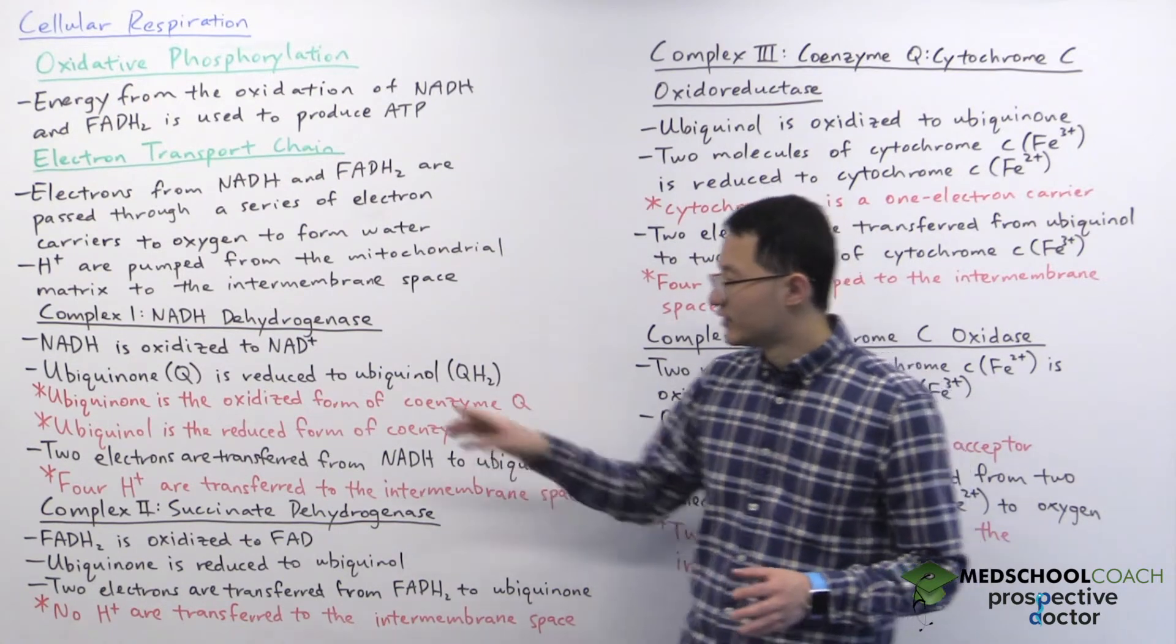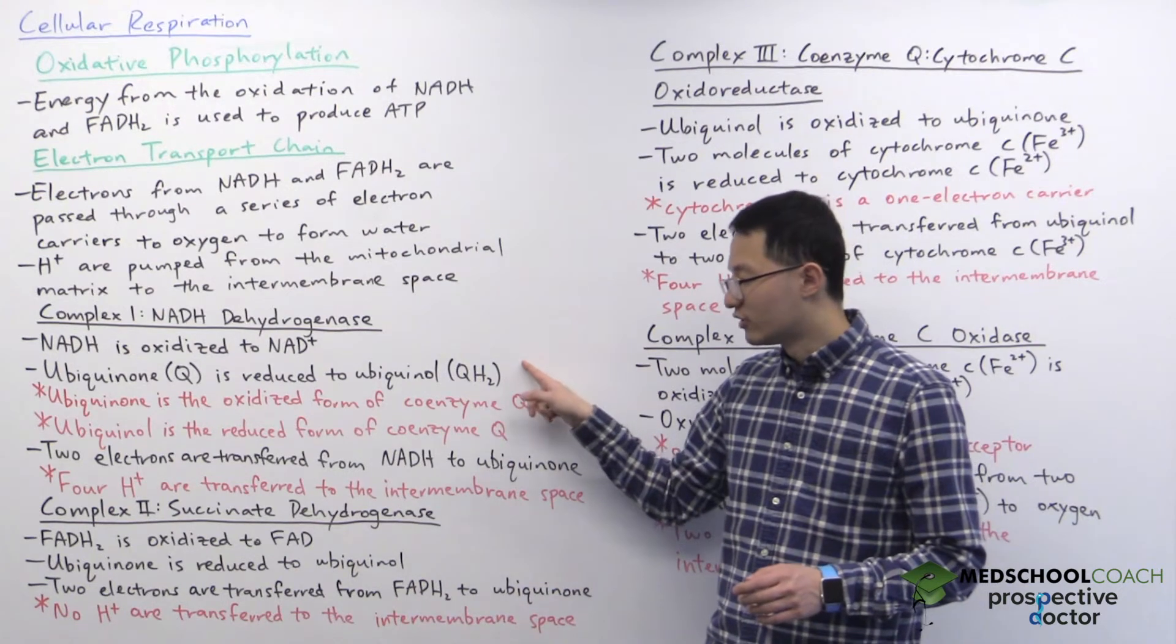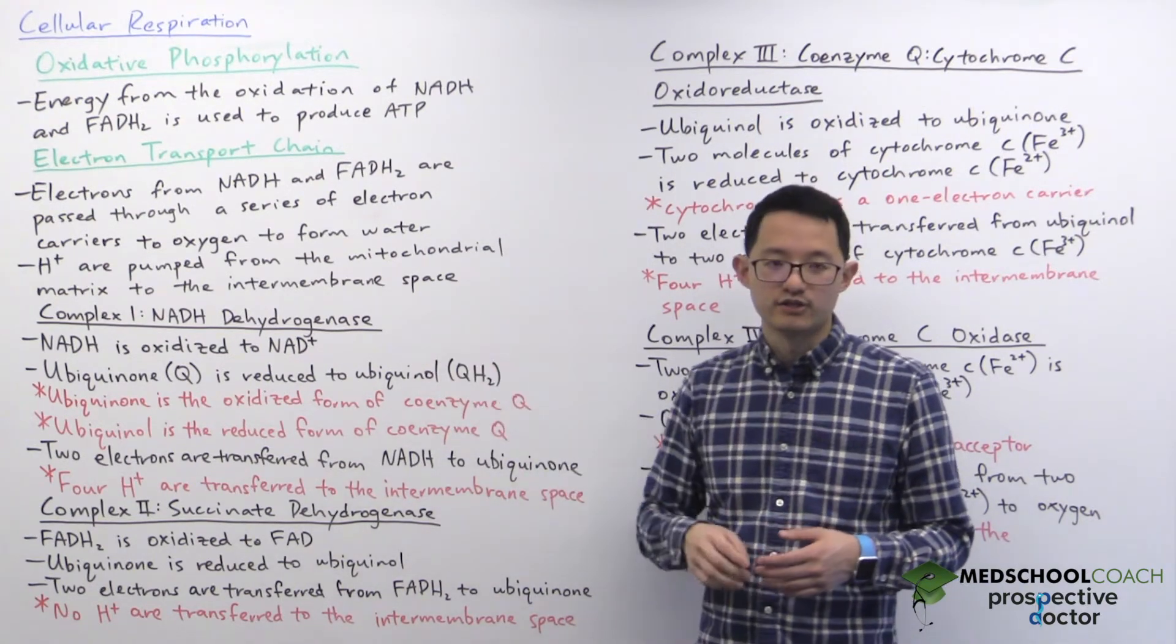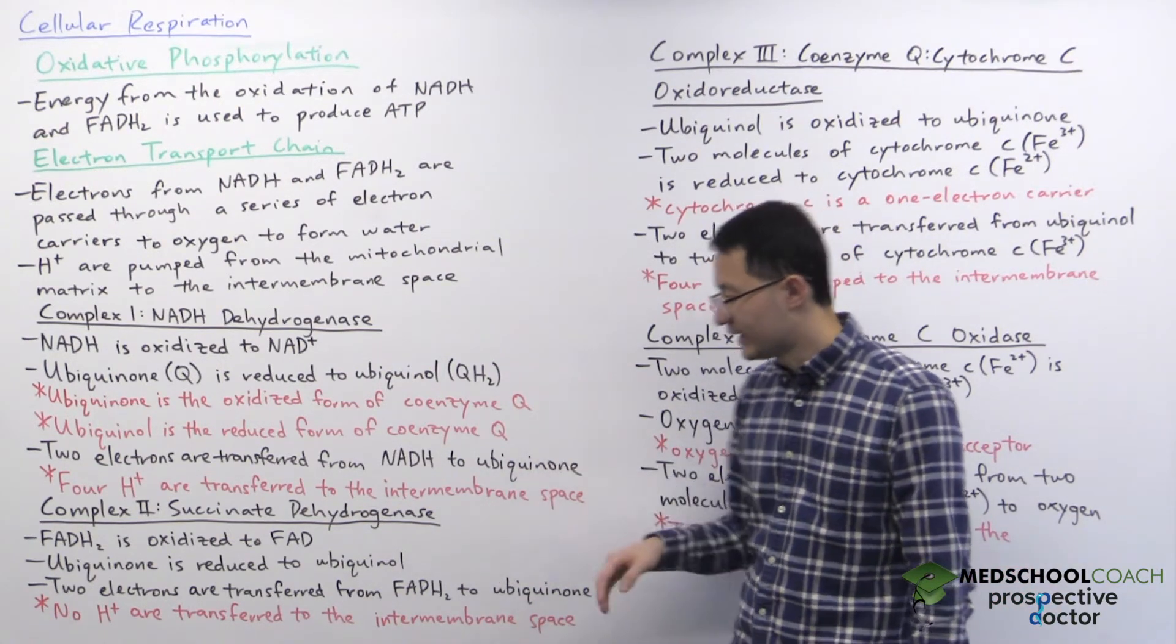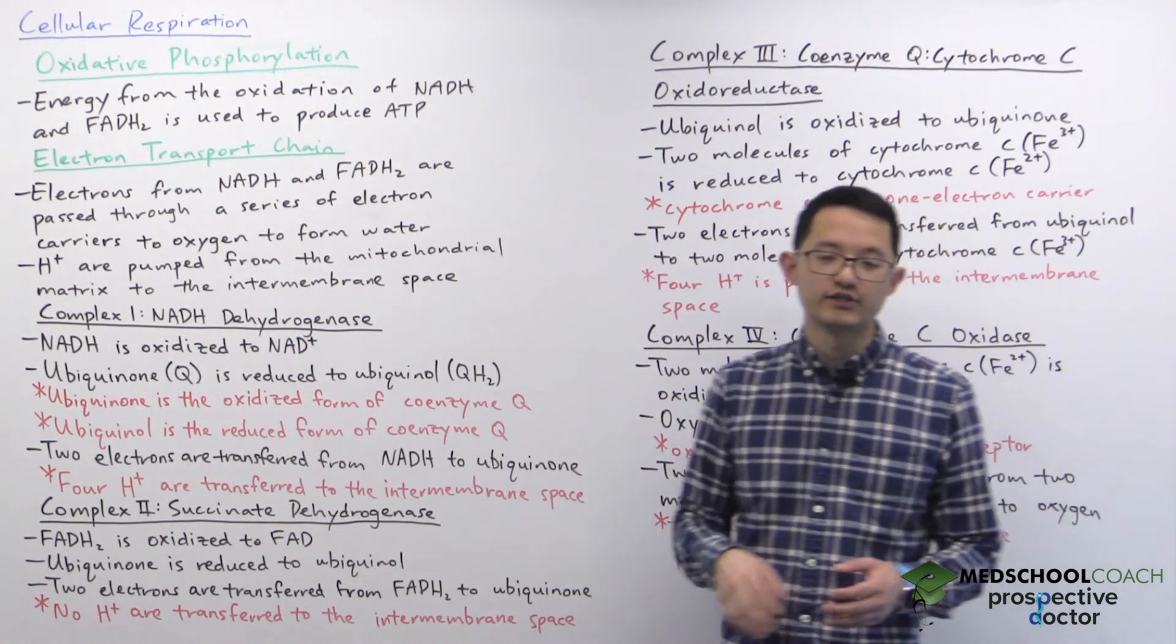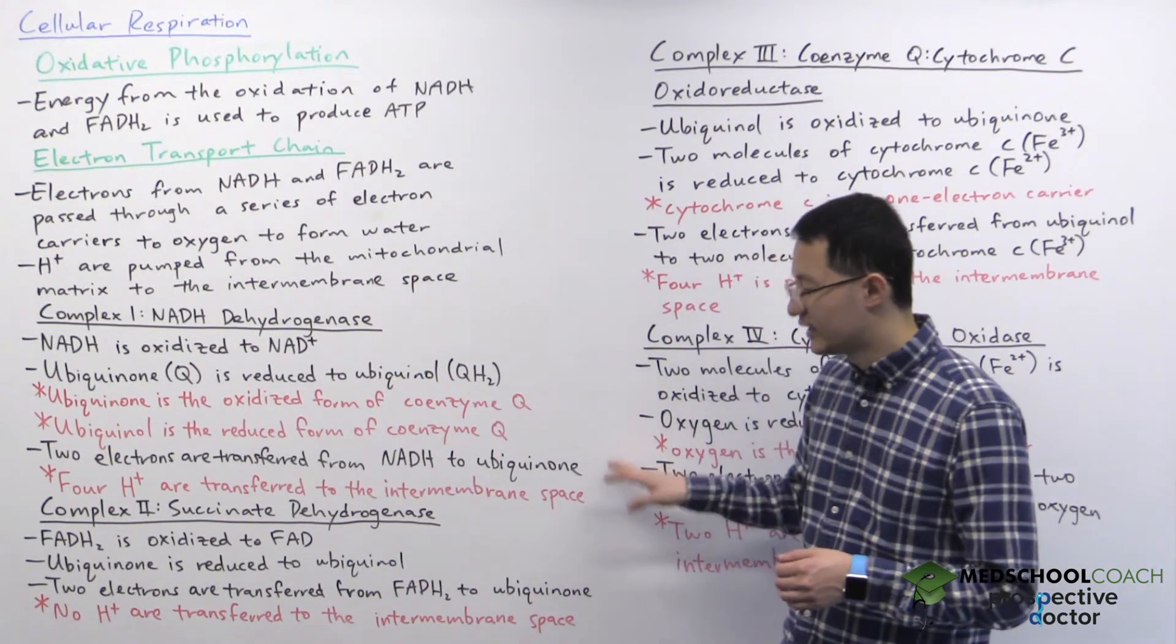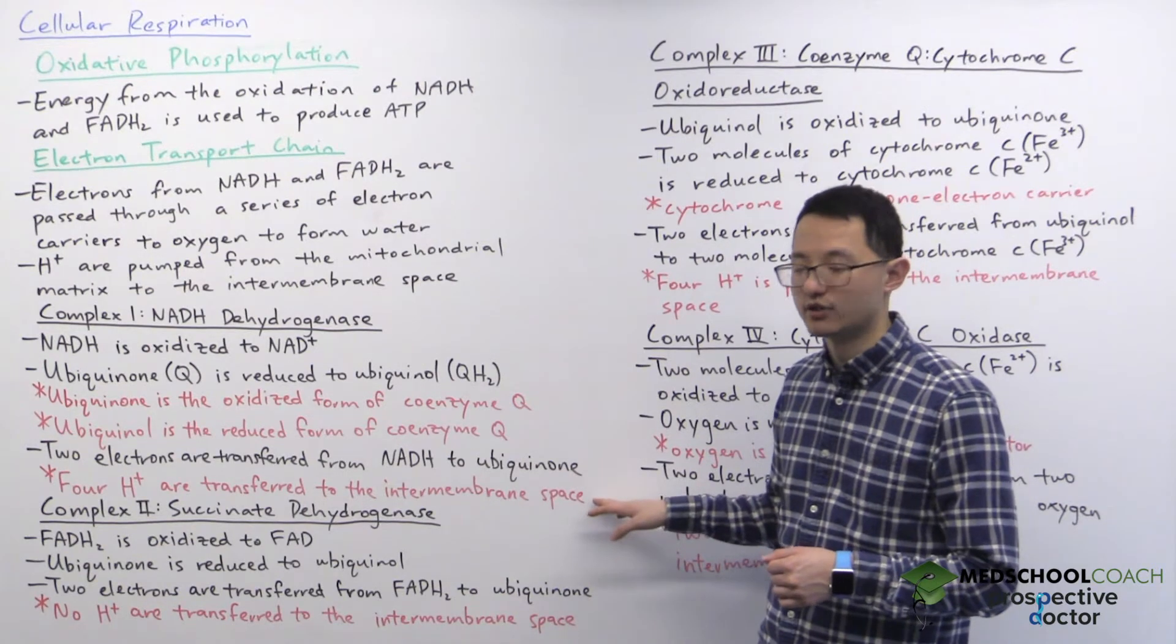Now you should know that ubiquinone is the oxidized form of coenzyme Q and ubiquinol is the reduced form of coenzyme Q. So in a number of different sources you'll find that they discuss how the electrons from NADH are transferred to coenzyme Q, but it's really the same thing. And here two electrons are transferred from NADH to ubiquinone. So essentially both NADH and ubiquinone are two-electron carriers. Each molecule can carry two electrons. And we pump four protons from the mitochondrial matrix to the intermembrane space.